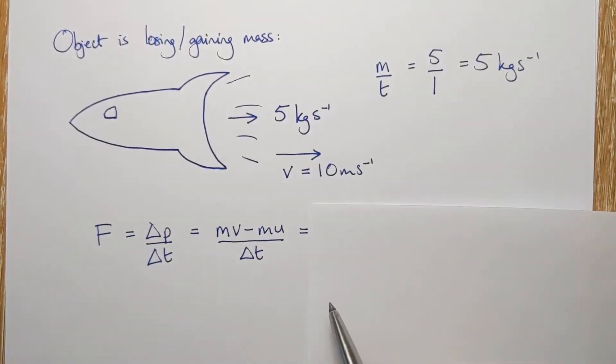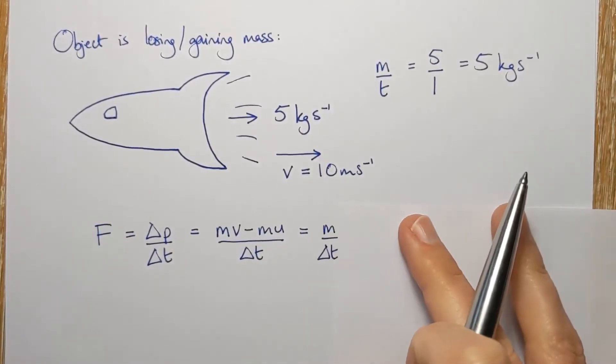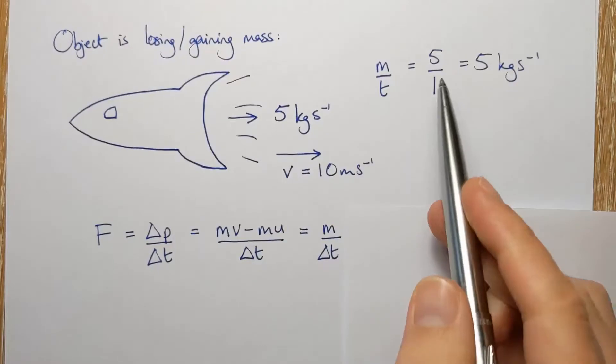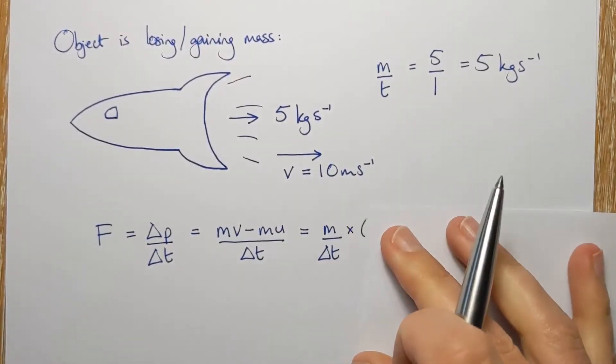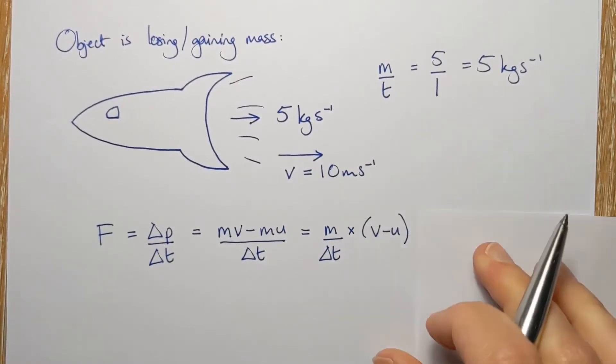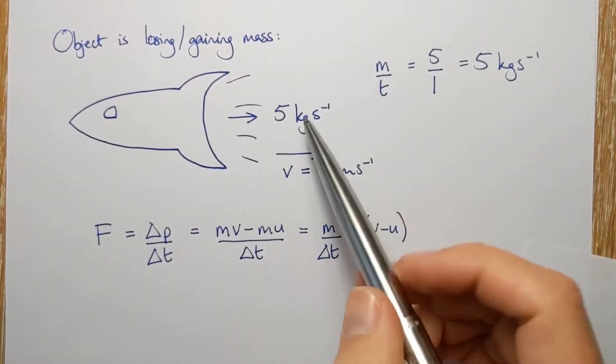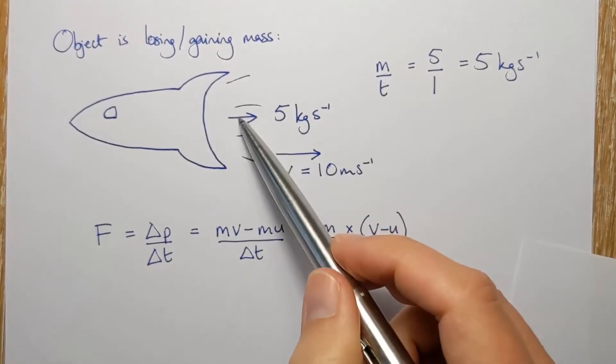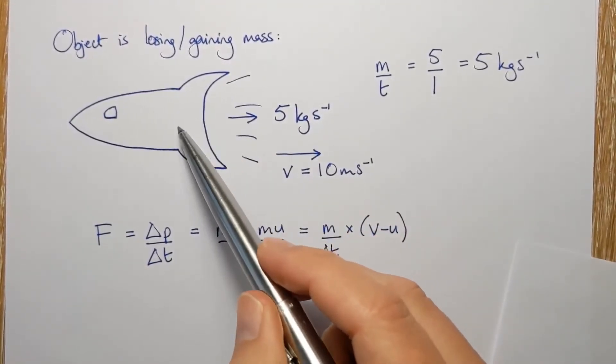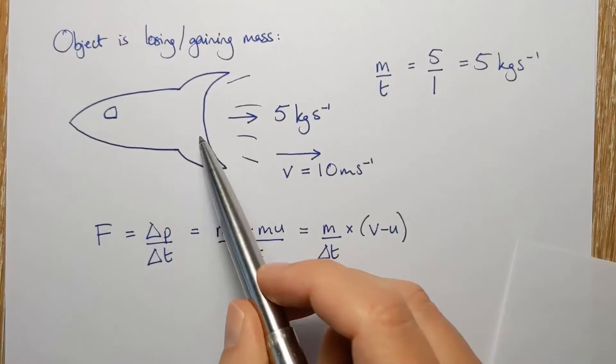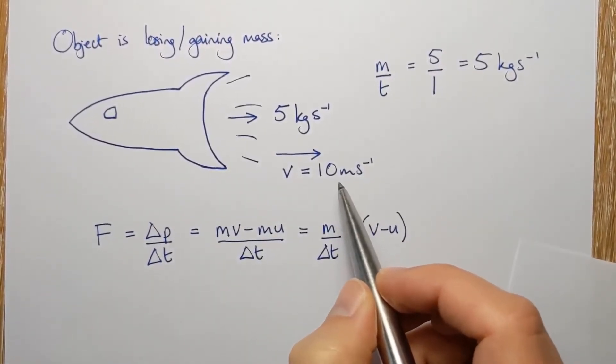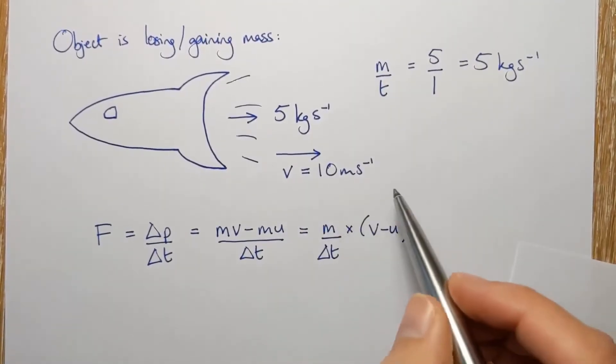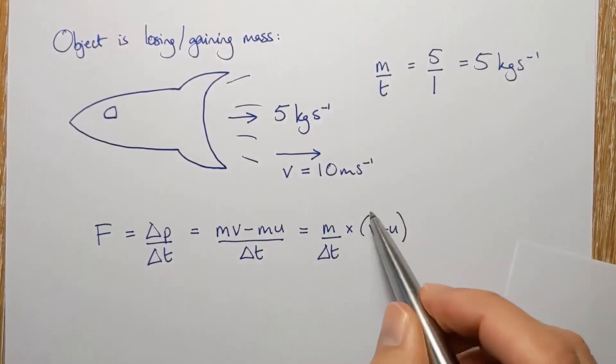And I'm going to push it out the back with a particular velocity. And I'm saying I'm going to push it out the back at 10 meters per second. In this situation, it's a little bit easier to think of it as the mass that's changing. So there's our five kilograms per second is going to go in there times by the change in velocity of that mass.